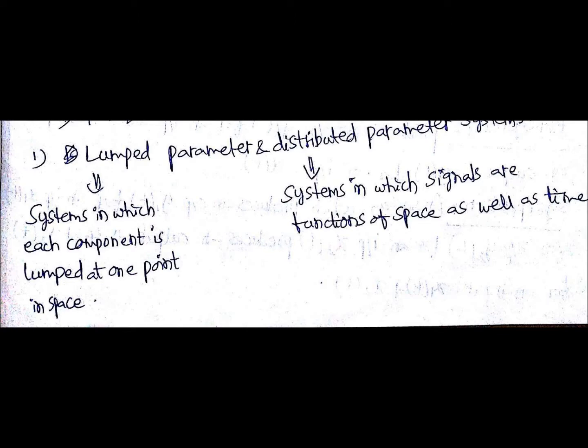So then, the first type of system that we taught in the previous lecture is lumped parameter and distributed parameter systems. So what is this?